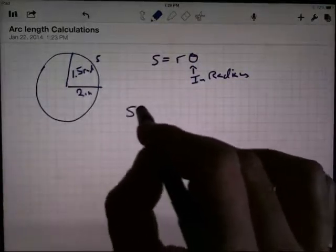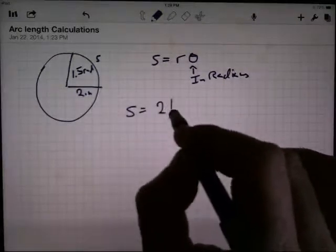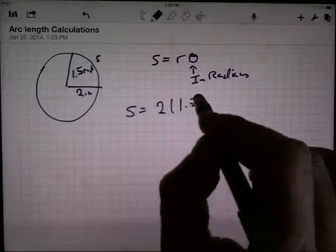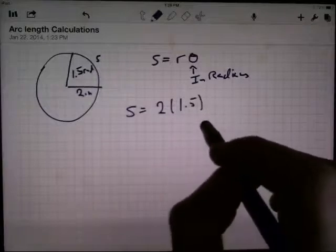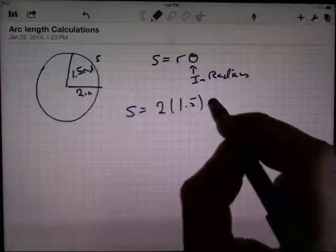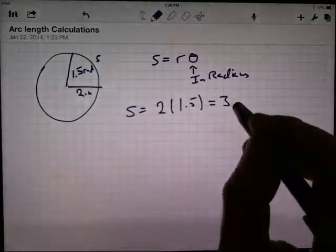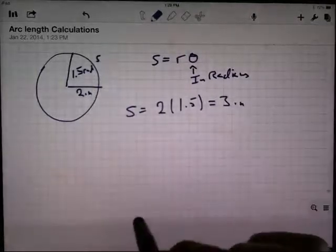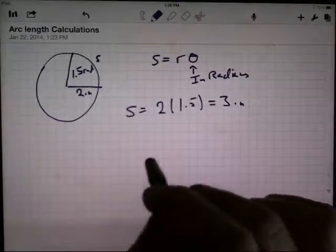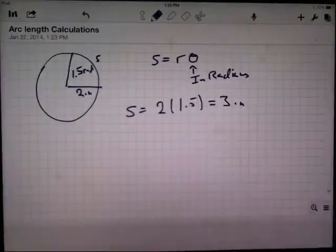Well, the arc length should be the radius 2 times the angle, which is 1.5. And that turns out to be 2 times 1.5 would be 3. And that should be in inches. I know the radius, I know the angle, I can put them in. The angle is already in radians, so we're all set.